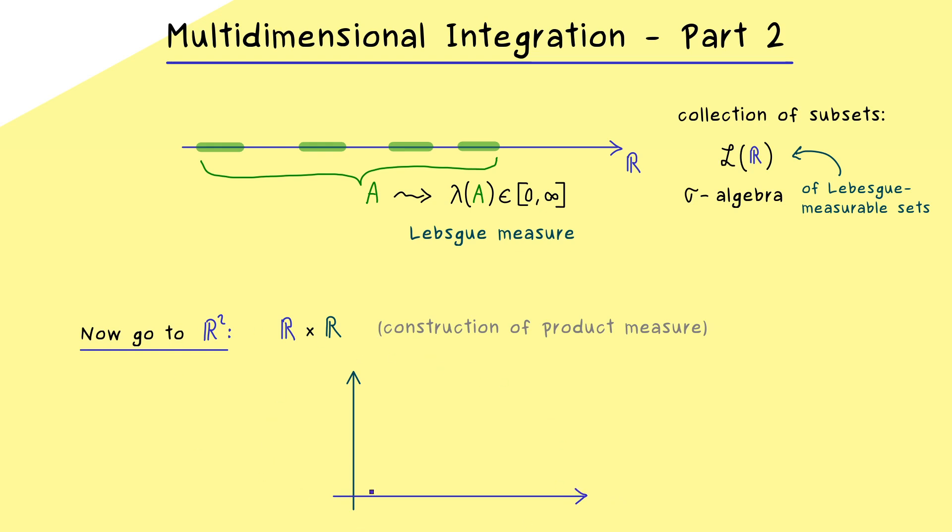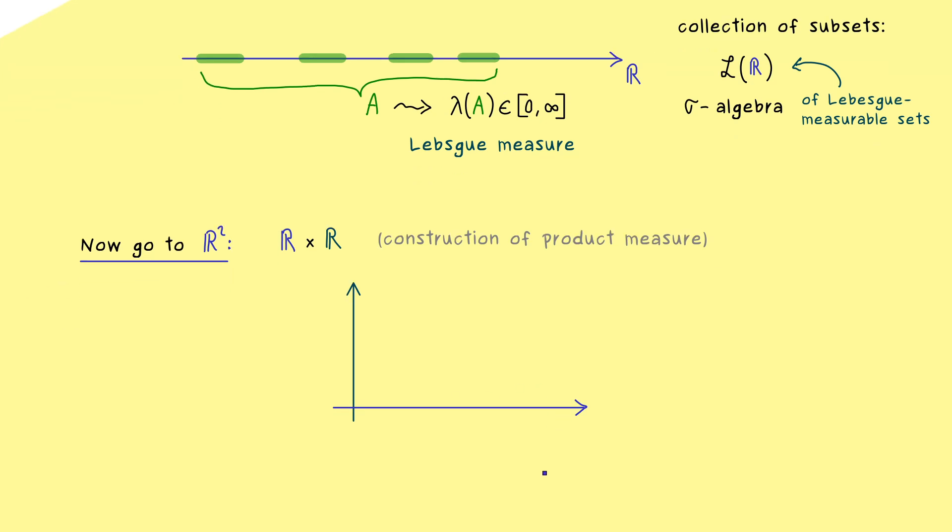Okay, so this here is R2 and now we can simply take a subset on the real number line here. And on the other hand, we can also take a subset on the other real number line. And then let's call the first one A1 and the second one A2. And now what we can simply do is to form the Cartesian product of A1 with A2. And then we get a nice subset in R2.